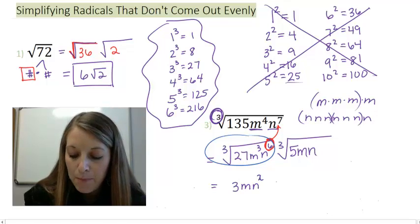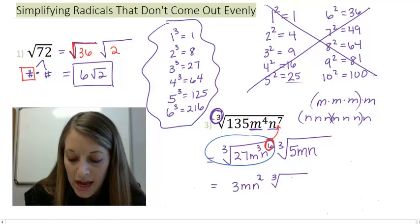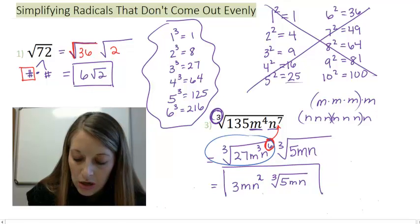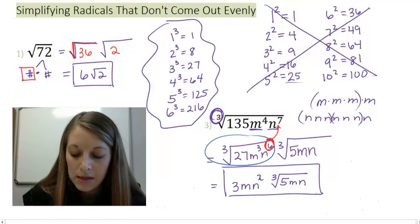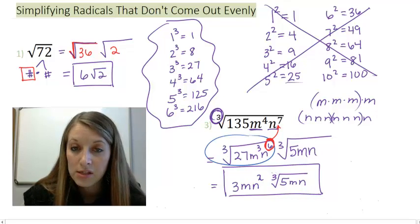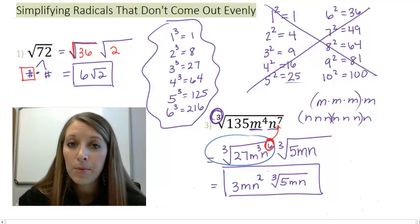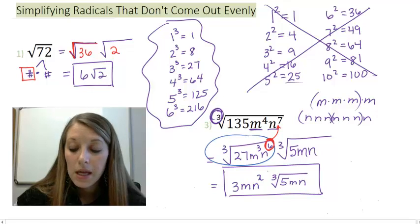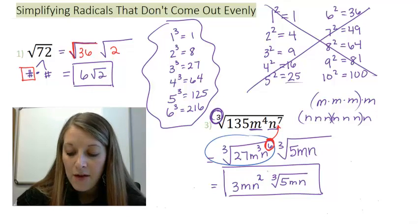And then my bad pi are just my leftovers. I just copy down to the next step. So my final answer here is 3mn squared times the cube root. And don't forget this cube here. That's a simple mistake a lot of students make. The cube root of 5mn.